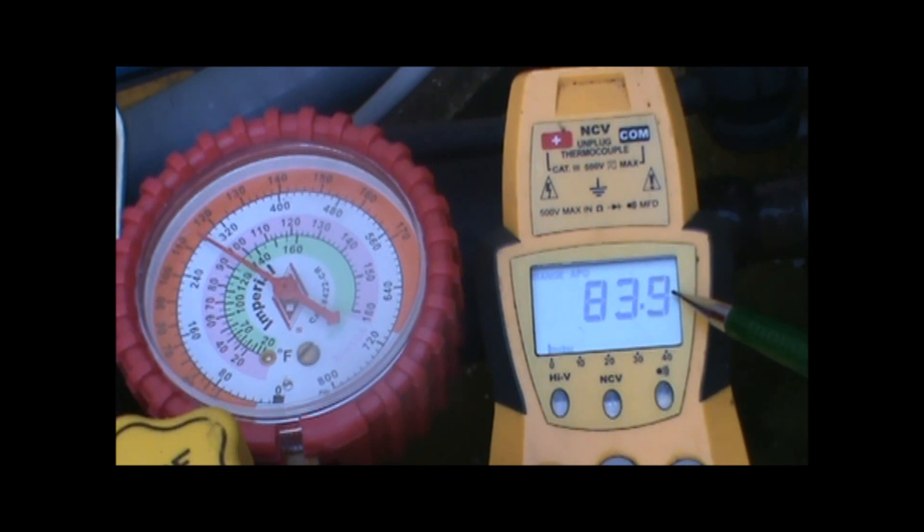Now when you have sub-cooling and you have proper sub-cooling levels, which this is, it indicates that the refrigerant has now condensed back down into liquid, that there's no vapor, and we have a solid column of liquid going back to the evaporator coil through the metering device.